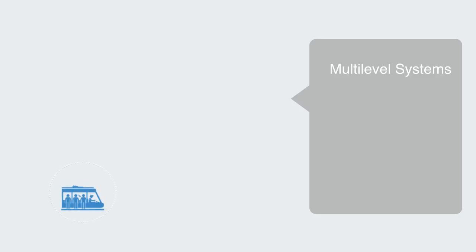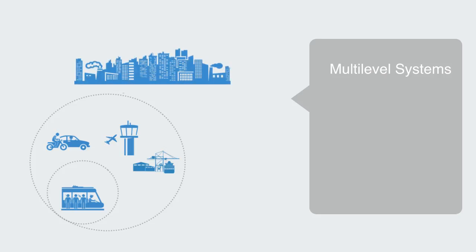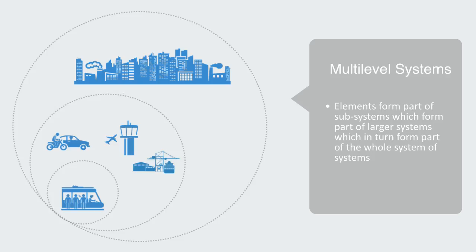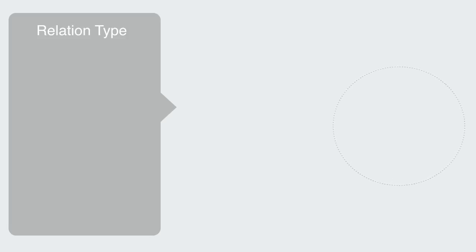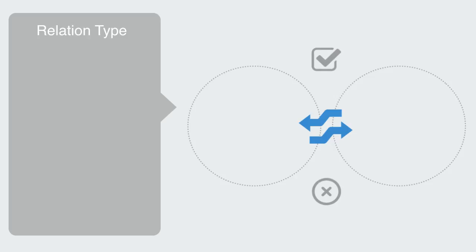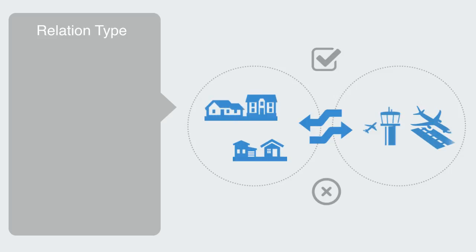Complex engineered systems are what are called systems of systems. They have a multi-layered hierarchical structure, as elements form part of subsystems, which form part of larger systems, which in turn form part of the whole system of systems. A subway train is part of the mass transit system, which is part of the transportation system, which combines with many other systems to form the whole urban environment. What is important when looking at the whole system is how these different subsystems interrelate — do they interact in a constructive or destructive fashion? For example, is the airport in our metropolis built right beside a major residential area, resulting in noise pollution — a destructive relation that reduces the functionality of the whole system.